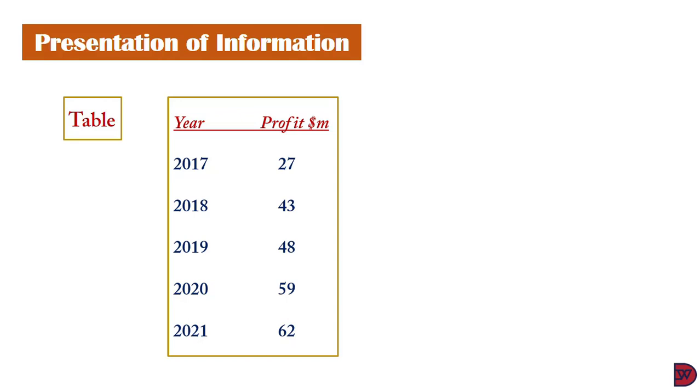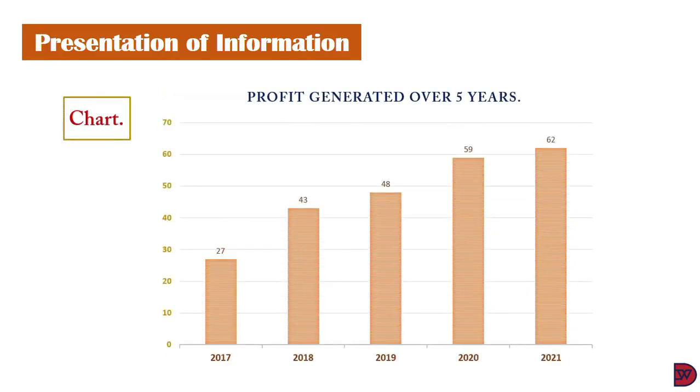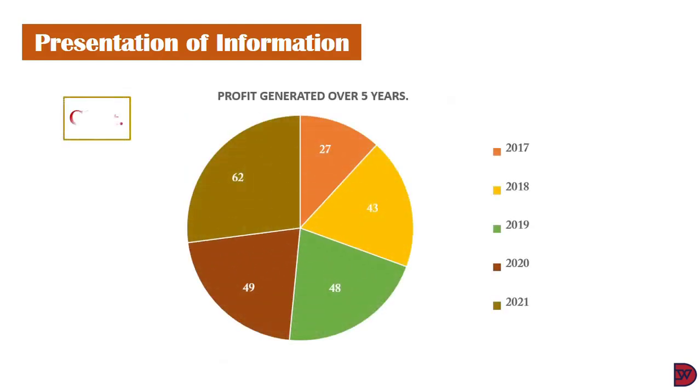Information can also be presented in charts. This is a bar chart. You see the various years on the horizontal line, which we call the X-axis, and the profits made on the vertical line, which is the Y-axis. Another chart is also the pie chart, same as the earlier one. This one is in the form of a circle with each year's performance shown as a pie to the larger circle.